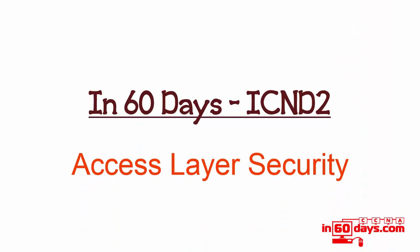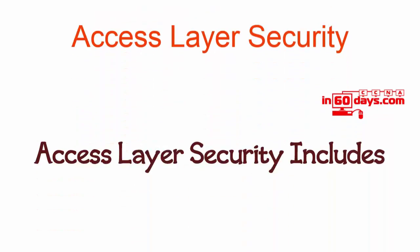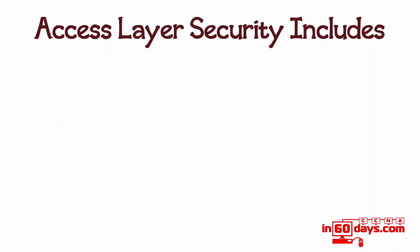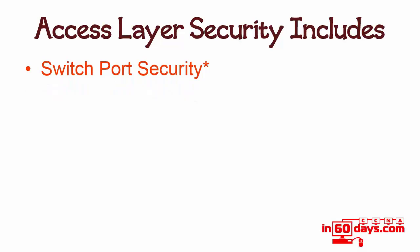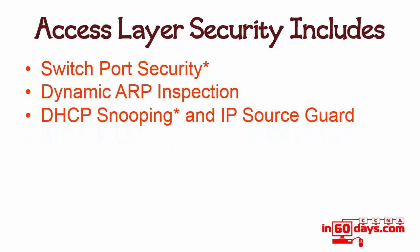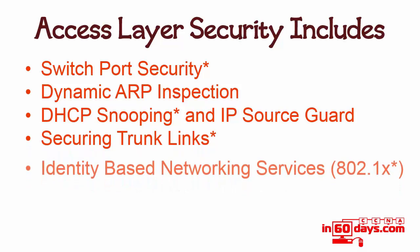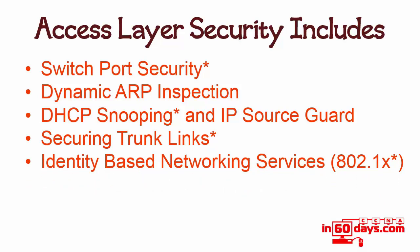Access layer security is a new set of topics for the CCNA syllabus, dropped down from the CCNP Switch. Access layer security includes things such as switch port security — I've put an asterisk next to the things currently in the CCNA syllabus — dynamic ARP inspection, DHCP snooping, IP source guard, securing your trunk links, and identity-based networking services. In particular, the syllabus covers 802.1x, ports, VLANs, and ACLs.